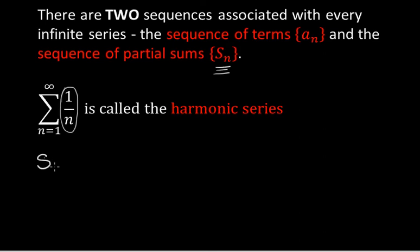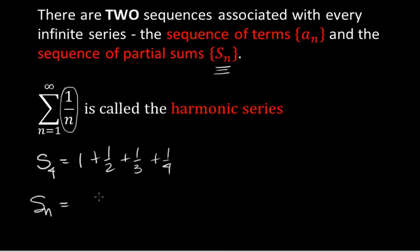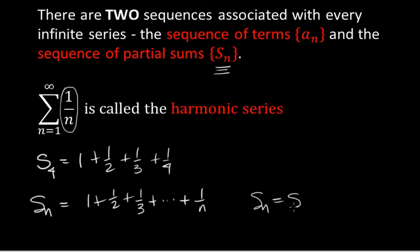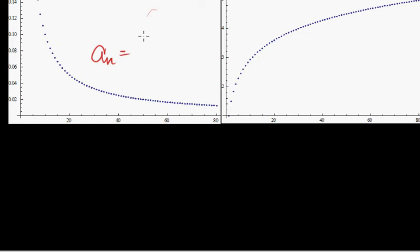Let's write out a couple of partial sums. S_4 would be 1 plus 1/2 plus 1/3 plus 1/4. S_n would be 1 plus 1/2 plus 1/3 plus dot dot dot plus 1/n, and you can see that S_n equals S sub n minus 1 plus 1/n. Using Mathematica, I plotted the sequence A sub n equals 1/n — the terms of the harmonic series — and we knew they go to 0 as n goes to infinity.